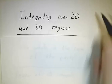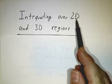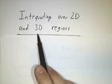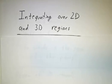In particular, if you have a function of x and y, you might integrate it over a two-dimensional region, and if you have a function of x, y, and z, you might integrate it over three-dimensional regions. The question is, what does a two- or three-dimensional integral mean?